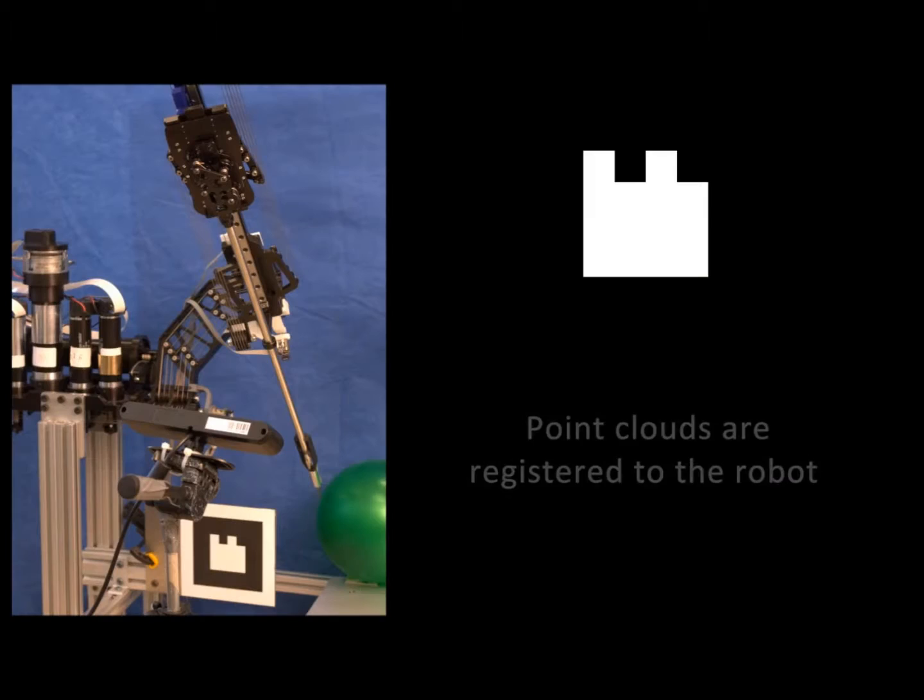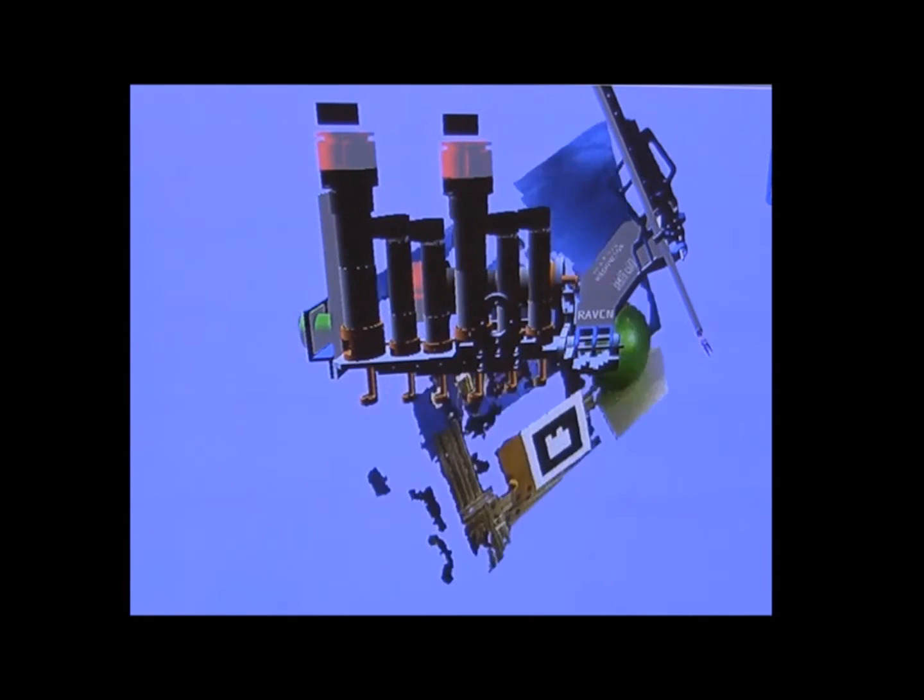The black and white object is used to register the position of the robot end effector to the point cloud image.